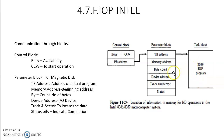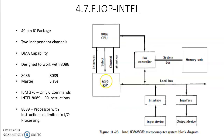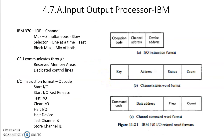The details required to perform the task include: task block address, memory address, byte count (how many bytes need to be transferred), the target device address, and for magnetic disk, track and sector details are required. The status field represents whether the operation is done or not. So the CPU communicates with the Intel 8089 I/O processor using these control blocks and parameter blocks. In this topic we discussed two types of input-output processors: one made by IBM and the other made by Intel. Thank you.